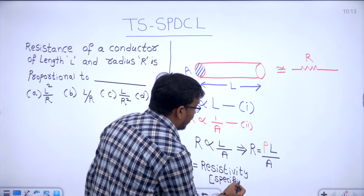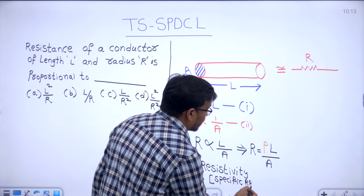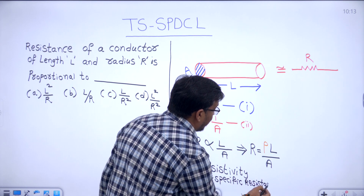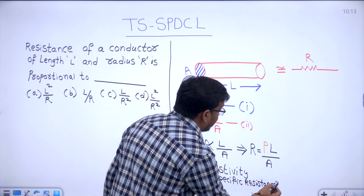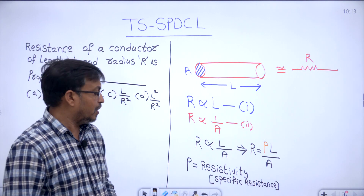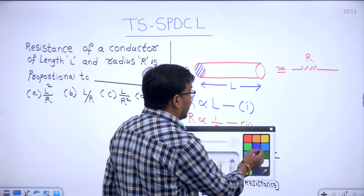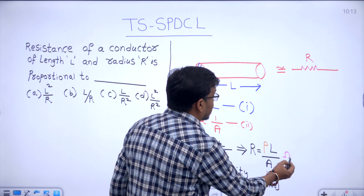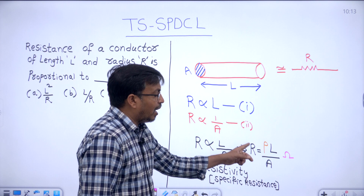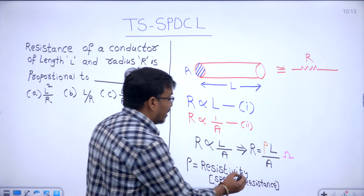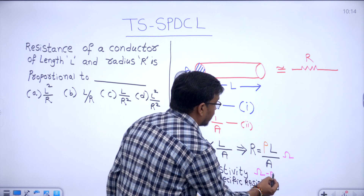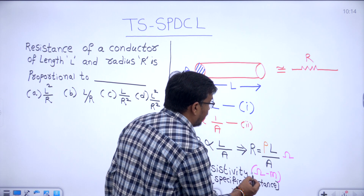Rho (ρ) is known as resistivity, and another name for resistivity is specific resistance. Resistance R has units of ohms. Resistivity formula is rho equals R times A divided by L, and the units of resistivity are ohm-meter.